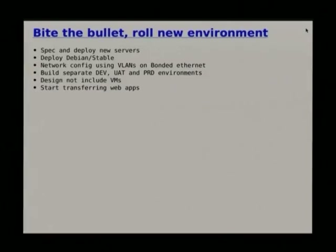We spec'd up new machines and bought them — that takes a while in the slow business process at a university. We deployed Debian specifically because it includes all the packages we need without having to package stuff by hand, the release cycle for security updates is much faster, and the VLAN and bonded Ethernet tools are all there by default. We set up three environments — dev, UAT (user acceptance testing), and production — nice and well staged with a lot of tooling and workflow built around that model.